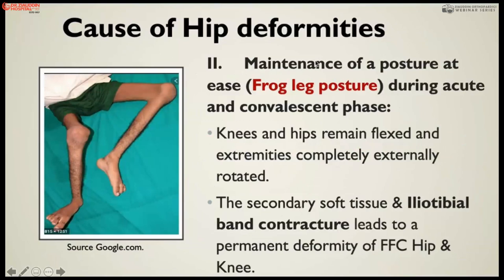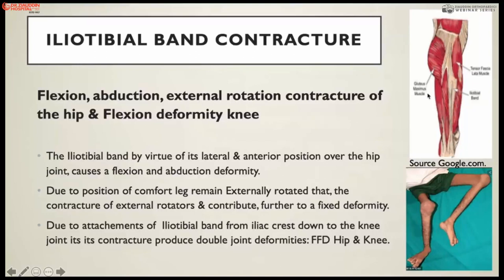A positional factor also contributes: during acute paralysis and the chronic phase, the child lies or sleeps in the frog-leg position, producing postural contractures extending from the hip joint to the knee joint with external rotation. This leads to secondary soft tissue contracture, particularly of the iliotibial band and tensor fascia lata, producing a permanent flexion-abduction hip contracture and knee flexion deformity.